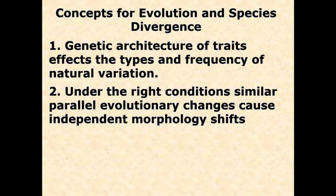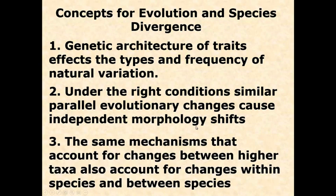Under the right conditions, very similar changes — like in the jaguar and jaguarundi — can cause independent but seemingly identical, yet convergent, morphology shifts. Finally, the same mechanisms that make differences between species also make differences within a single population. Looking at the person next to you, maybe 50-60% of your alleles differ. But it might also be that you have different regulatory regions even with the same allele. Regulatory elements can have a major impact on your phenotype — often more so than the alleles themselves.